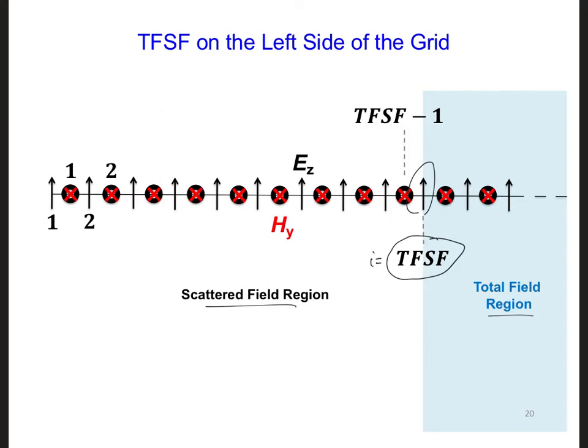To update this Ez field, we can use the fact that H total equals H inc plus H scattered. In other words, we can turn this scattered Hy field right here at TFSF minus 1 into a total field by adding the incident field.